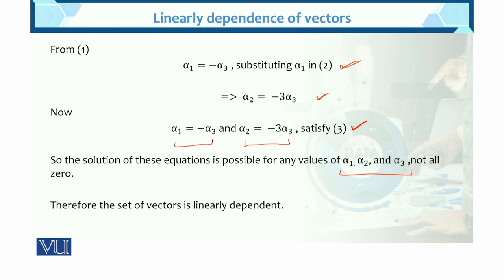So here in the dependent case, there is not only one solution. The solution of this equation is possible for any value of alpha 3 not all zero. For example, if alpha 3 = 1, then alpha 1 = −1 and alpha 2 = −3. Therefore, the set of vectors is linearly dependent, meaning other solutions besides zero exist.